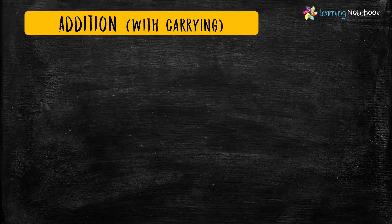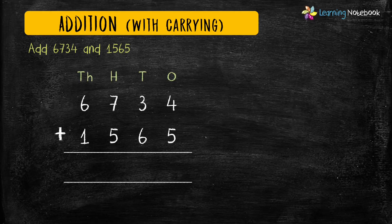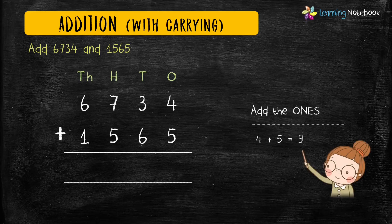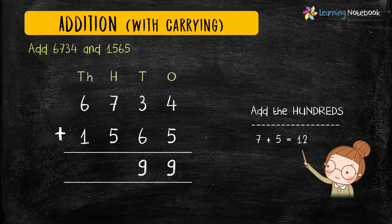The question is: add 6734 and 1565. First write these two numbers in columns. Start adding from the ones place: 4 plus 5 equals 9. Next add the digits at tens place: 3 plus 6 equals 9. Then add the digits at hundreds place: 7 plus 5 equals 12.